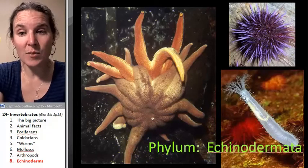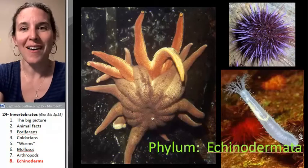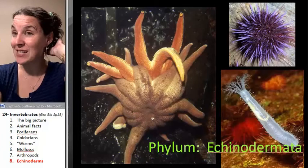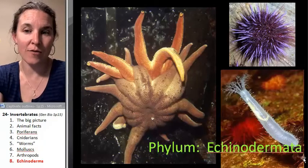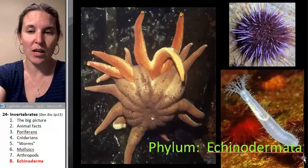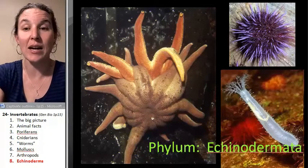Urchins are echinoderms. This is a sea cucumber. Sea cucumbers are fantastic. They're the critters that we told you about that squirt their guts out if they are feeling endangered. They'll squirt their guts out and try to scare off the bad guys that are coming to get them.